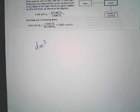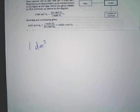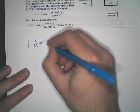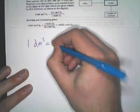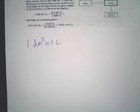We'll talk about the actual stoichiometry of this. Let's go over this. This is a conversion you have to know: one cubic decimeter is equal to one liter. Write that down somewhere. This is really important that you know this.